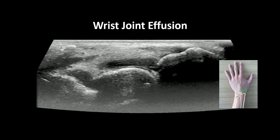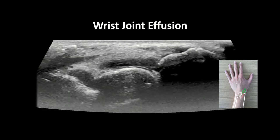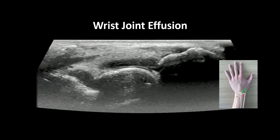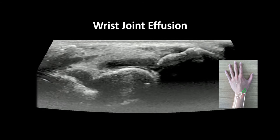This is an ultrasound clip demonstrating a wrist effusion in a patient presenting to the emergency department with atraumatic wrist pain, swelling, redness, and difficulty ranging the joint.